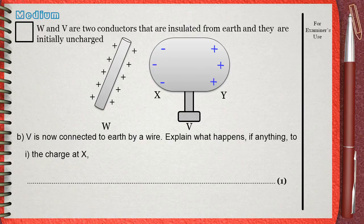Question B. V is now connected to Earth by a wire. Explain what happens, if anything, to the charge at side X.